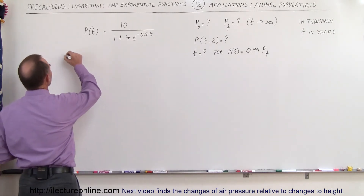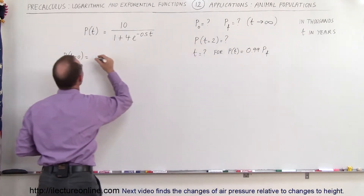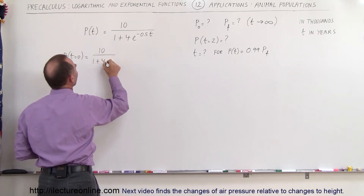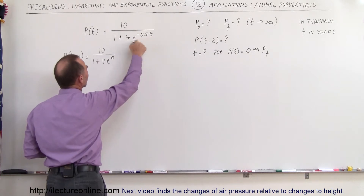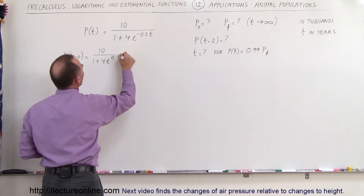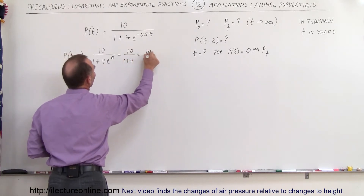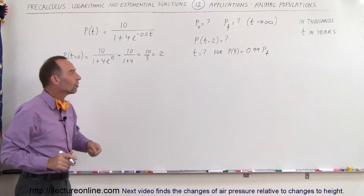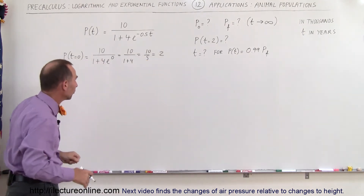What is the population when time is equal to zero? P(0) equals 10 divided by (1 plus 4 times e to the zero power). Since e to the zero equals 1, this becomes 10 divided by (1 plus 4), which is 10 divided by 5, which is 2. Since the numbers are in thousands, we start off with 2,000 deer in the forest.